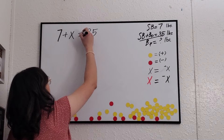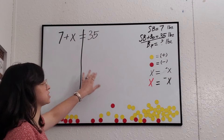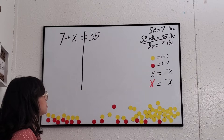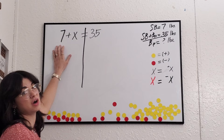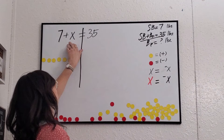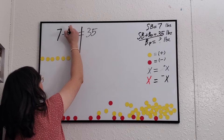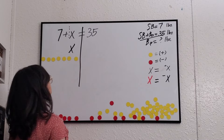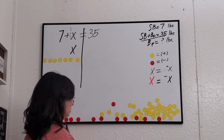Just like before, we need to make sure each side is balanced, so I'll put a line through the equals sign. With the counter method, we can see there are seven positive units on the left side, along with a positive x — there's an imaginary one in front of it. On the right side we have 35 positive units, so we count out 35 positive counters.